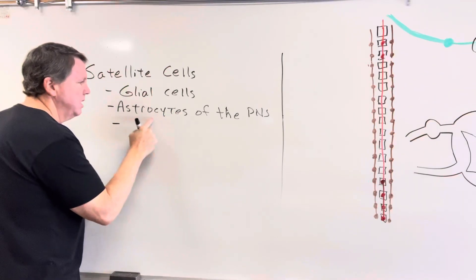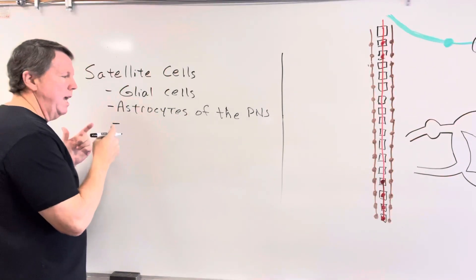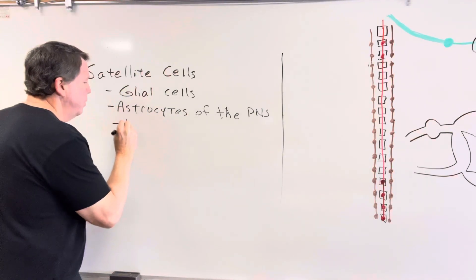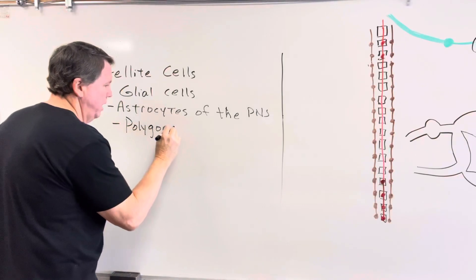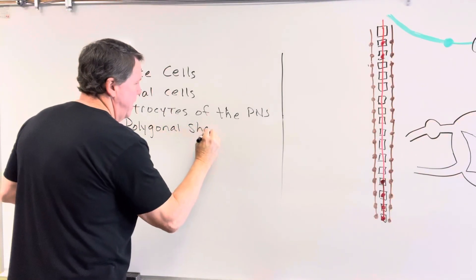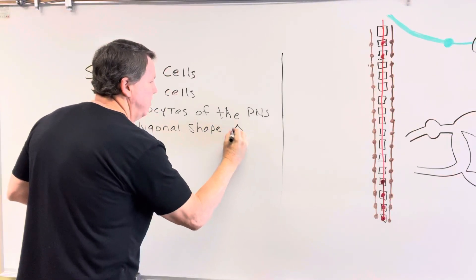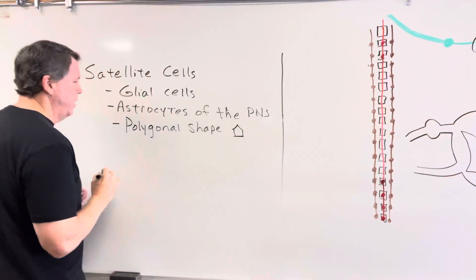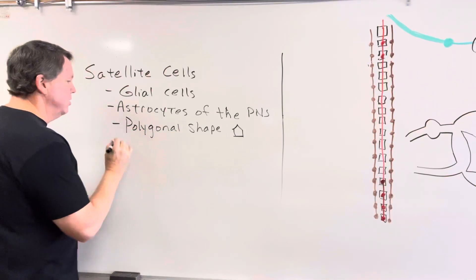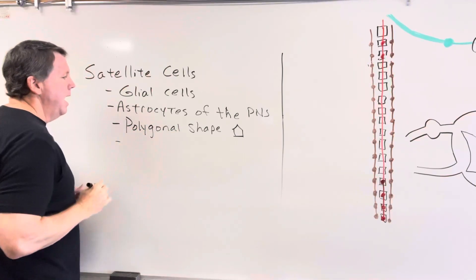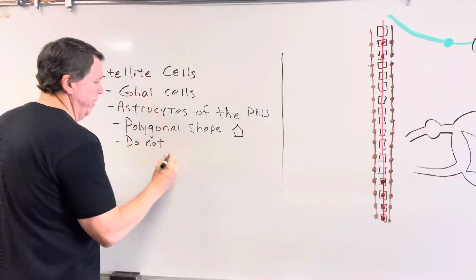Here's the key morphological difference: astrocytes are star-shaped and have arms, but satellite cells don't have arms and are actually polygonal-shaped — meaning they have at least three straight sides and three angles. They're also flat, and they do not play a role in the blood-brain barrier.